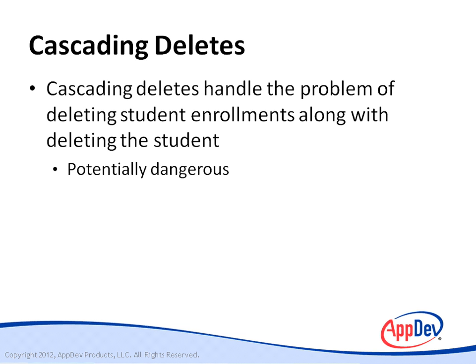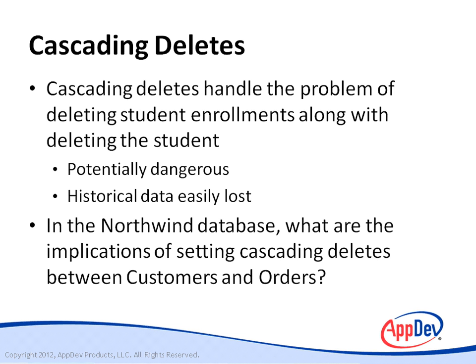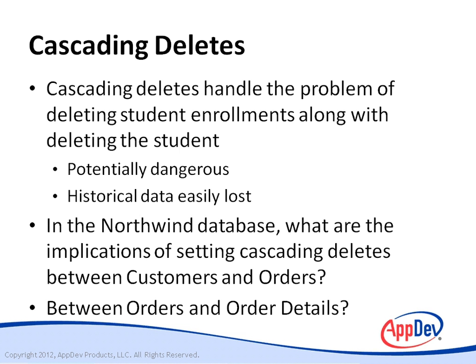A cascading delete is potentially very dangerous, mainly because it could mean the loss of historical data related to the deleted record. For example, enabling cascading deletes between the customers and orders table means you delete all orders for the deleted customer — presumably including orders that have long since been fulfilled. And if you delete an order in the orders table, all order details will be gone as well.